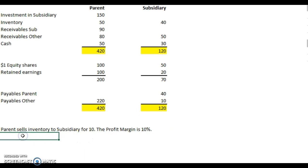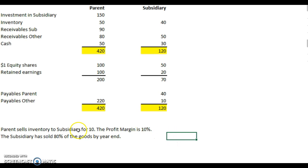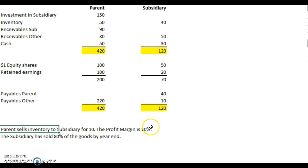The subsidiary has sold 80% of the goods by year end. So that means that 20% of the profit achieved by the parent at the expense of the subsidiary has remained in the group, and we therefore need to make a provision for that unrealized profit — a profit that we've not passed on to a third party outside of the group. Let's look at how much that provision might be and where we will make it.